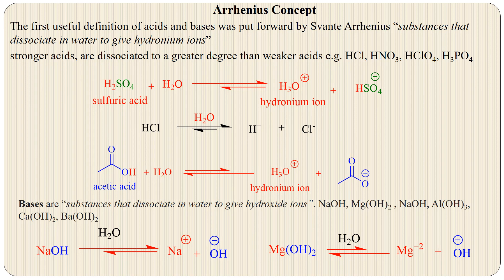First of all is the Arrhenius concept. Arrhenius said that substances which dissociate in water to give H⁺ or hydronium ions are called acids. For example, HCl, HNO₃, H₃PO₄. When dissociated in water, they produce the hydronium ion H₃O⁺ and a negative anion.